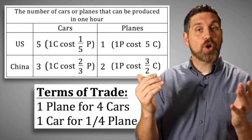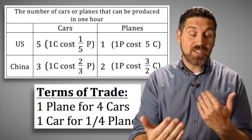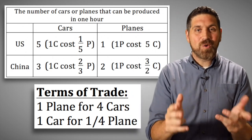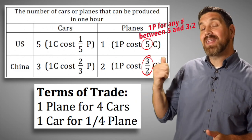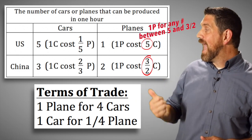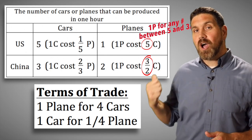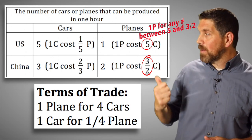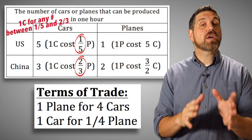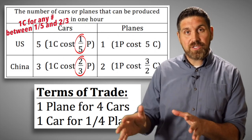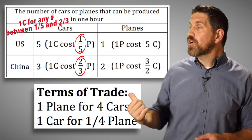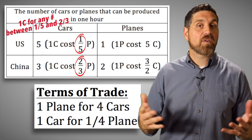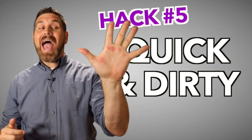So one plane for four cars is a mutually beneficial terms of trade. Here's the hack: one plane for any number between five cars and three halves of a car benefits both countries — any number between those two will work. Similarly, one car for any number between one fifth of a plane and two thirds of a plane works for both countries. That is how you calculate terms of trade.